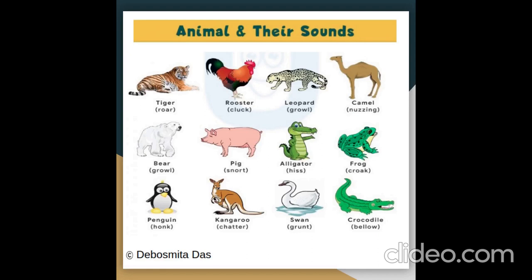Animals and their sounds: a tiger roars, a rooster clucks, a leopard growls, a camel makes a nuzzling sound, a bear growls, a pig snorts, an alligator hisses, a frog croaks, a penguin honks, a kangaroo chatters, a swan grunts, a crocodile bellows.